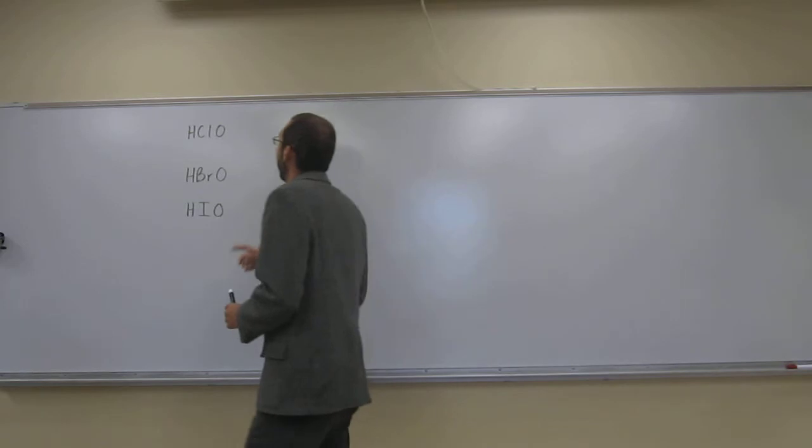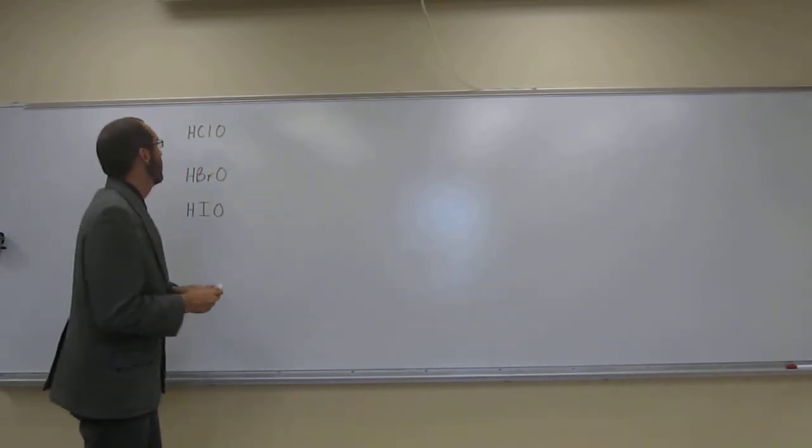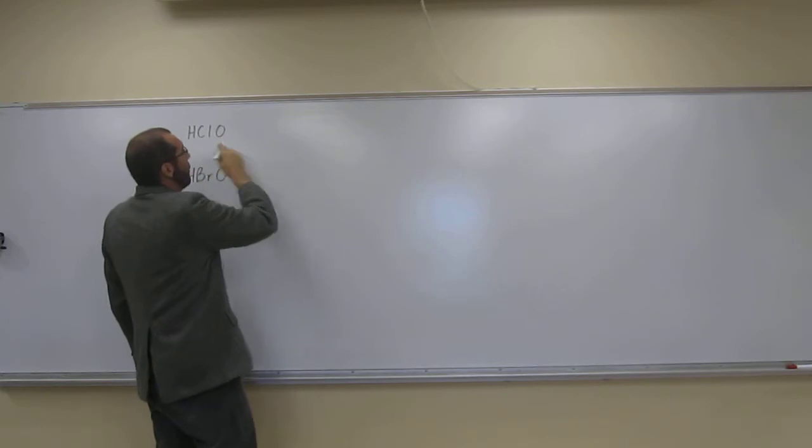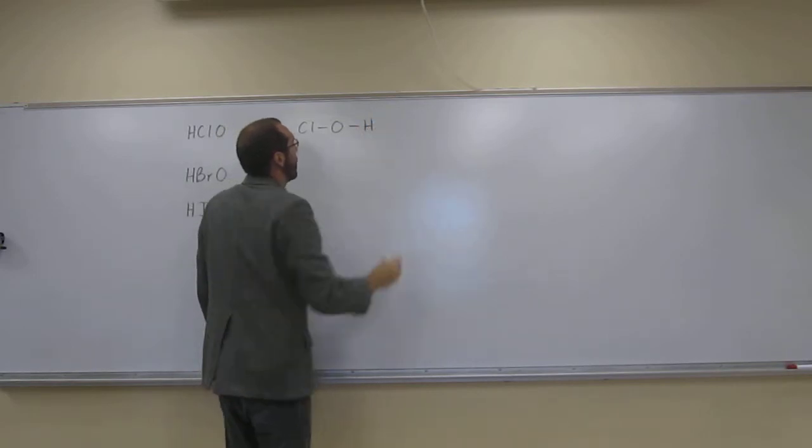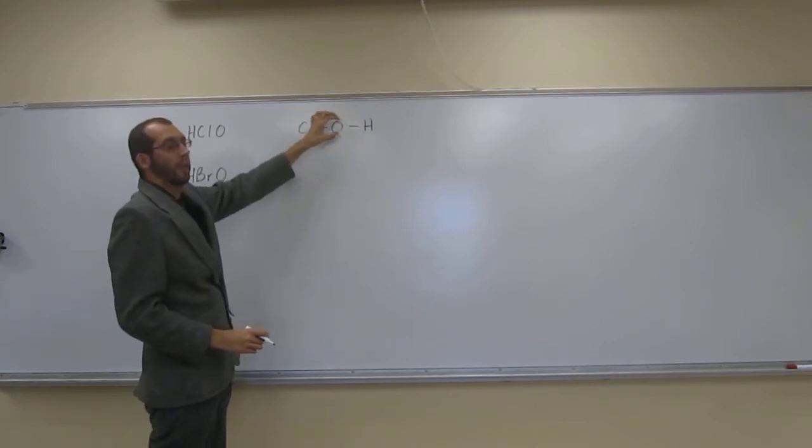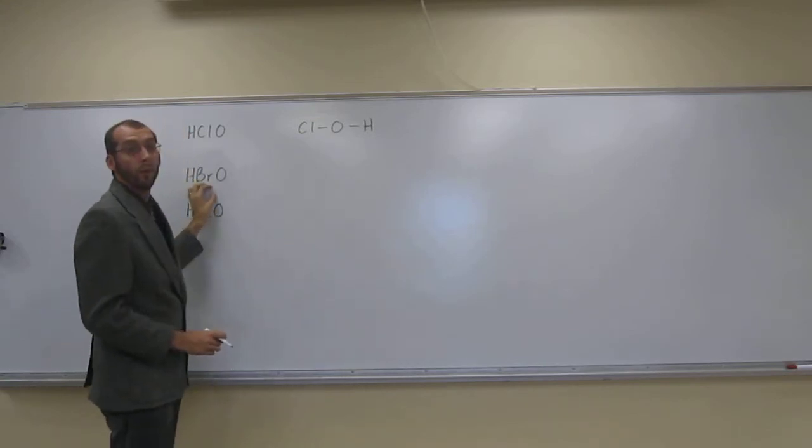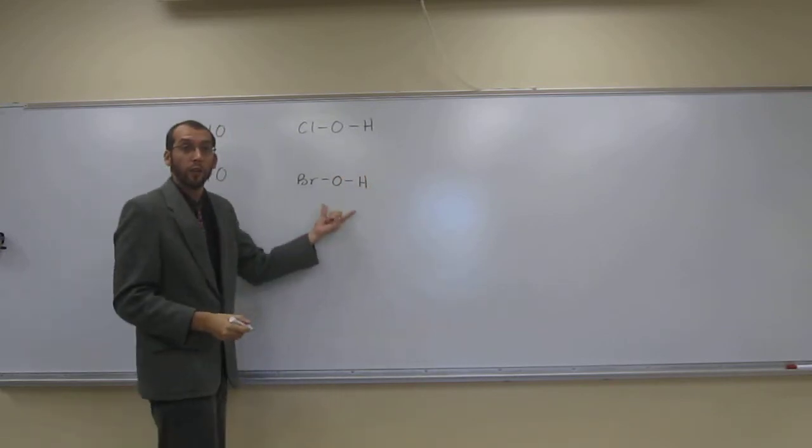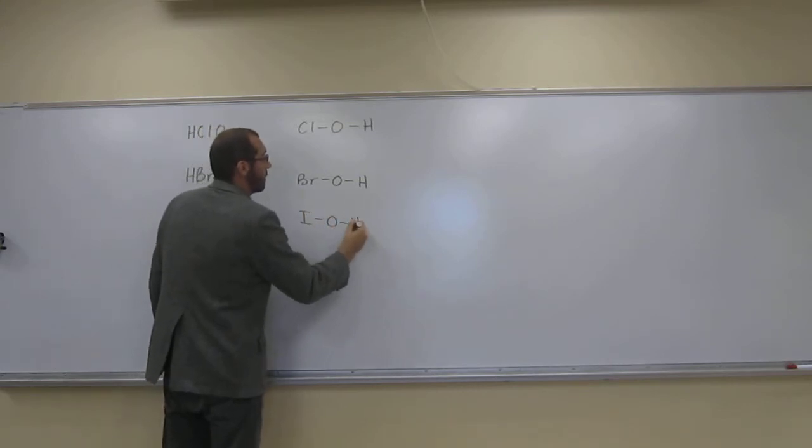So when we think about it that way, we realize that the chlorine attracts the electrons. This has an O-H bond, so it's going to look Cl-O-H like that. So this chlorine, even though it's far away over here, will attract—we call this an inductive effect—it will attract those electrons more so than the bromine will in this structure, and of course more so than the iodine will in this structure.